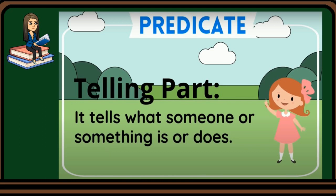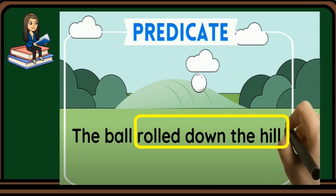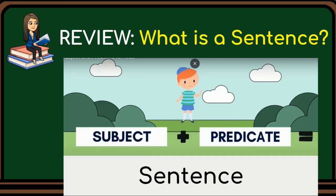The predicate is the telling part. It tells what someone or something is or does. For example: The ball rolled down the hill. Here, the predicate is rolled down the hill. If we combine a subject and a predicate, we can have a sentence.